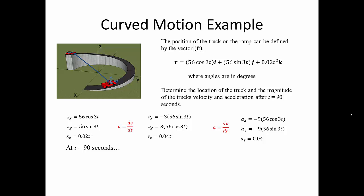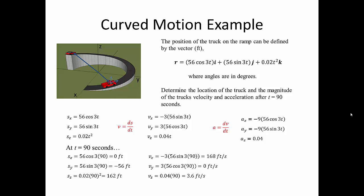At a time of 90 seconds, we plug in t = 90. The position in x becomes 0 feet, in y becomes -56 feet, and in z becomes 162 feet. The velocity in x becomes 168 ft/s, in y becomes 0 ft/s, and in z becomes 3.6 ft/s. The acceleration in x becomes 0 ft/s², in y becomes 504 ft/s², and in z becomes 0.04 ft/s².